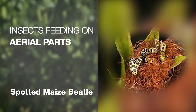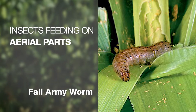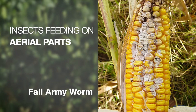The spotted maize beetle feeds on silks and cobs, while maize stalk borers feed on leaves, stems and cobs. The dreaded fall armyworm attacks the leaves, stems, ears and tassels of the maize plant.